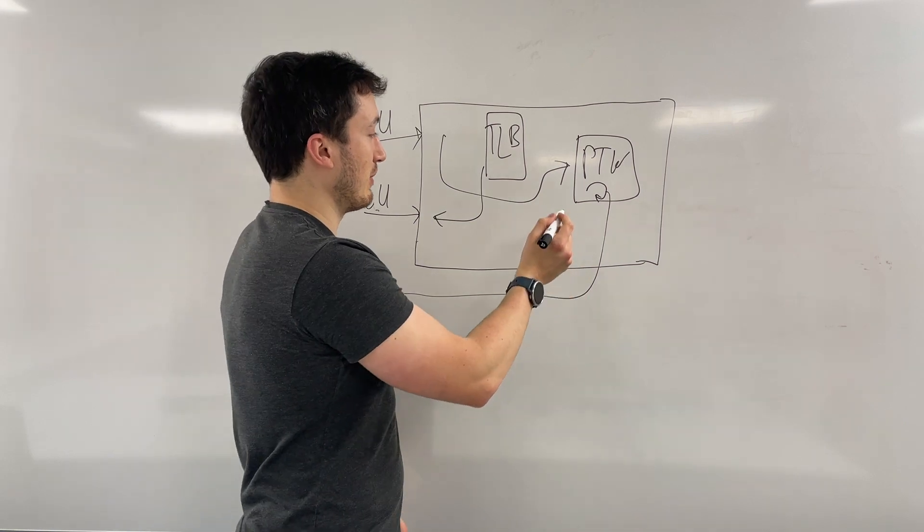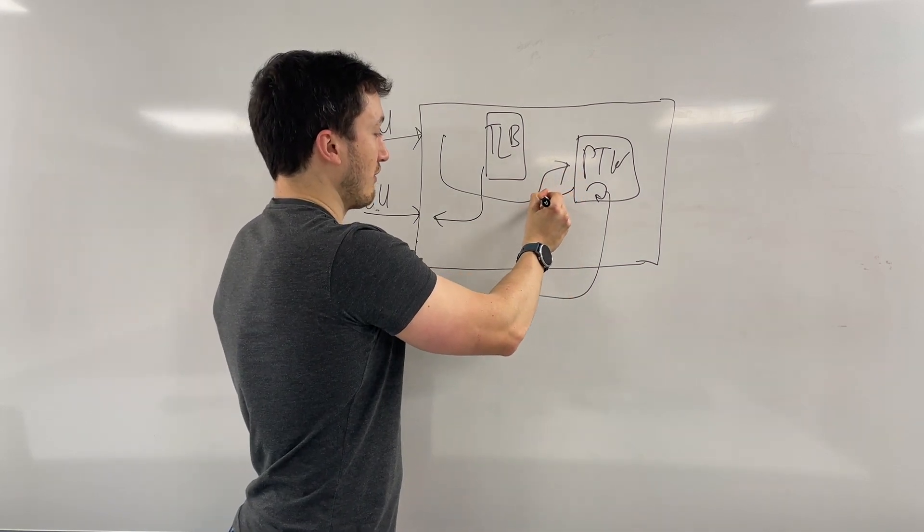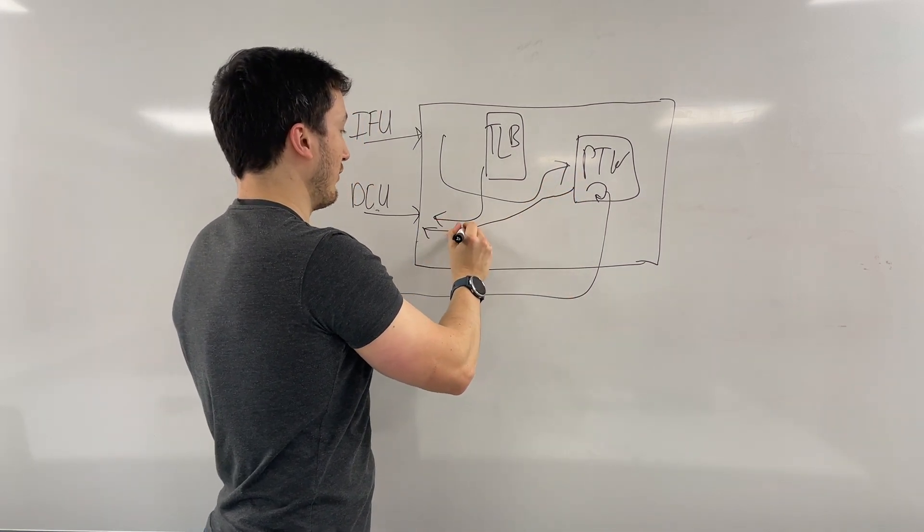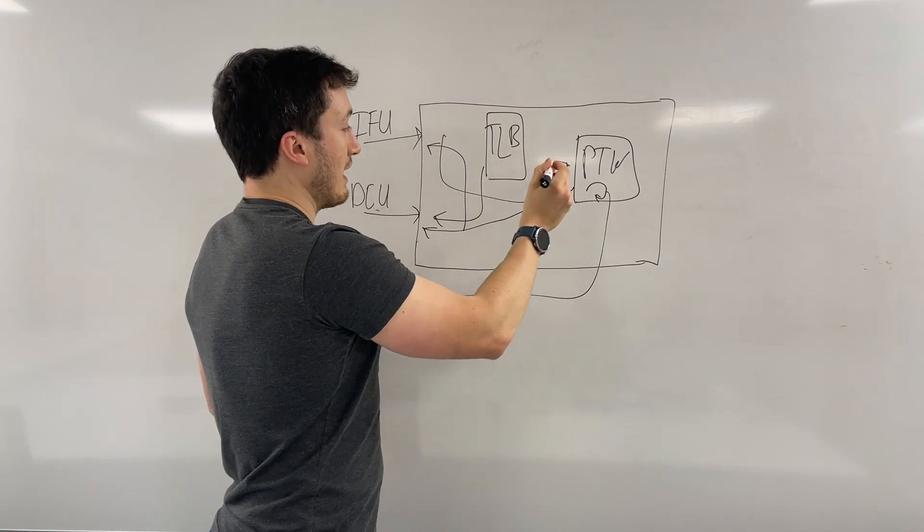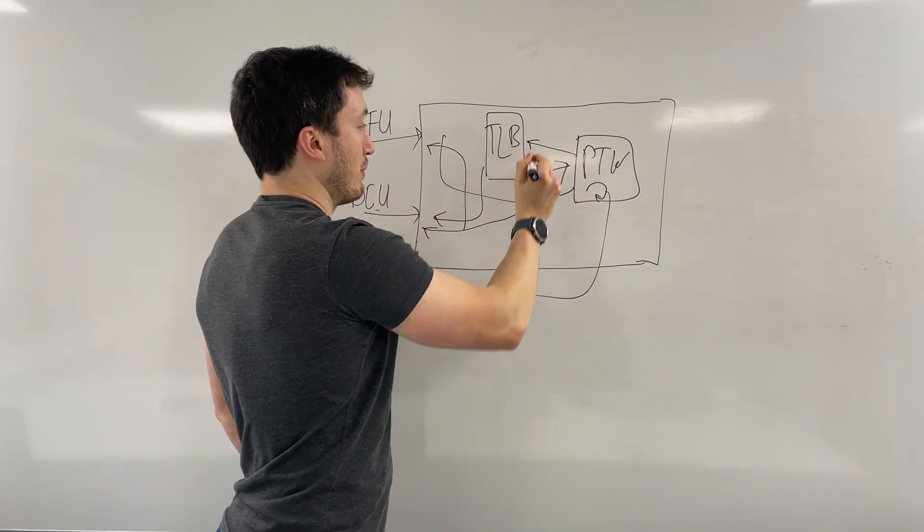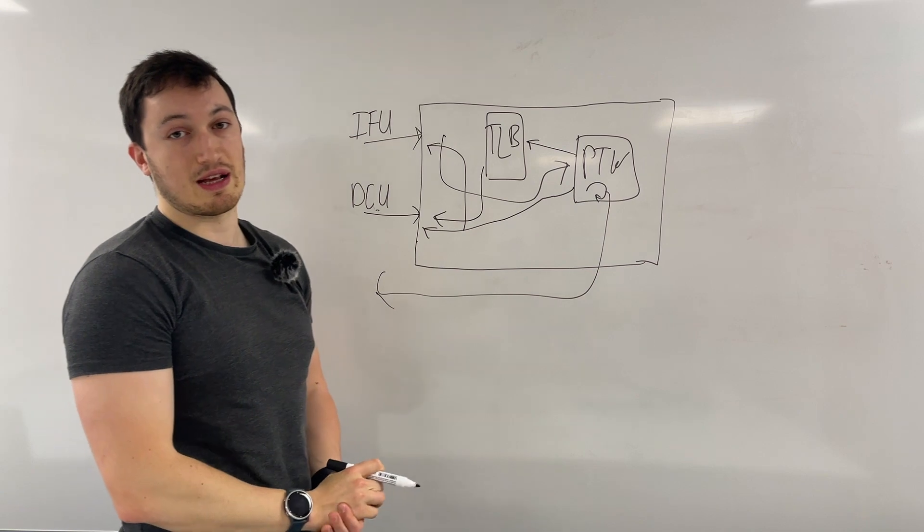When we have a request, we can do two things. Firstly, return it to the IFU or the DCU and we will also put it into the page table walker. So the next time if they need to request it again, we'll have that.